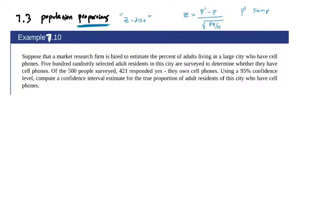And p prime is the sample proportion. That's what our textbook denotes it as. However, p hat is what your TI-84 will denote that as. Okay, so a bit of notation there.